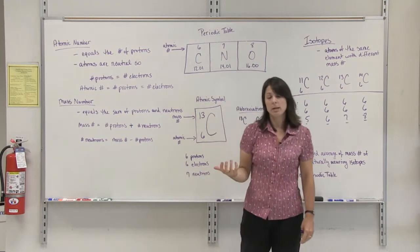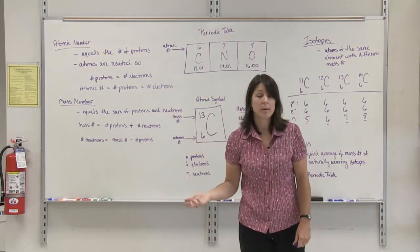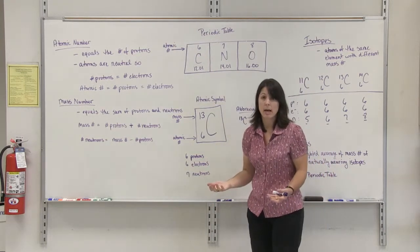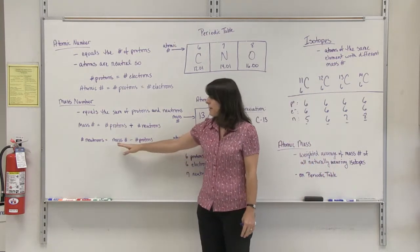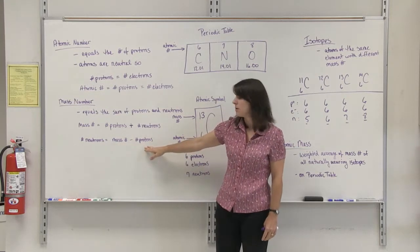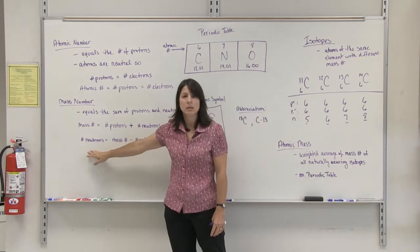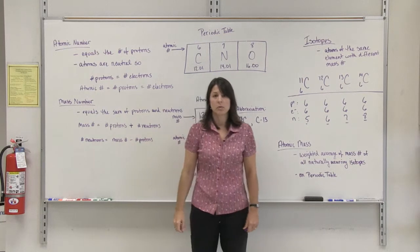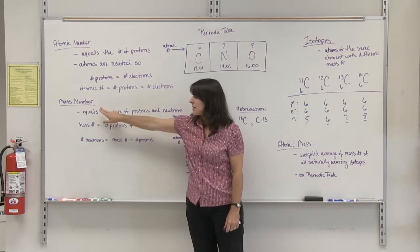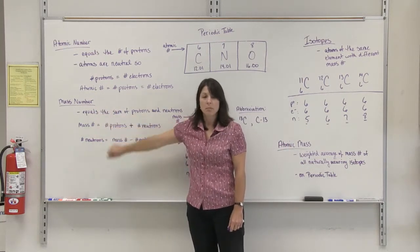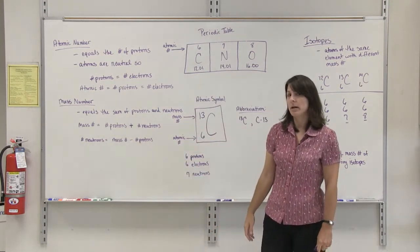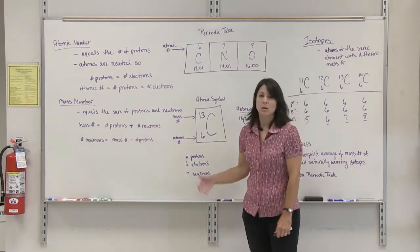Another question you may be asked is to determine how many neutrons are in an atom. In that case, if you knew the mass number, you could subtract the atomic number, or the number of protons, and that would leave you with the number of neutrons. The number of neutrons and the mass number cannot be found on the periodic table. One of those numbers would have to be provided for you in the question.